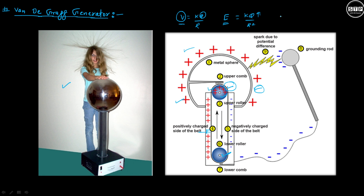At one point, this electric field will reach the dielectric strength. The dielectric strength is the point where the medium or air around the metallic sphere becomes conductive. At that point, the charge accumulated on the metallic sphere will start getting transferred to the atmosphere. This is known as corona discharge.